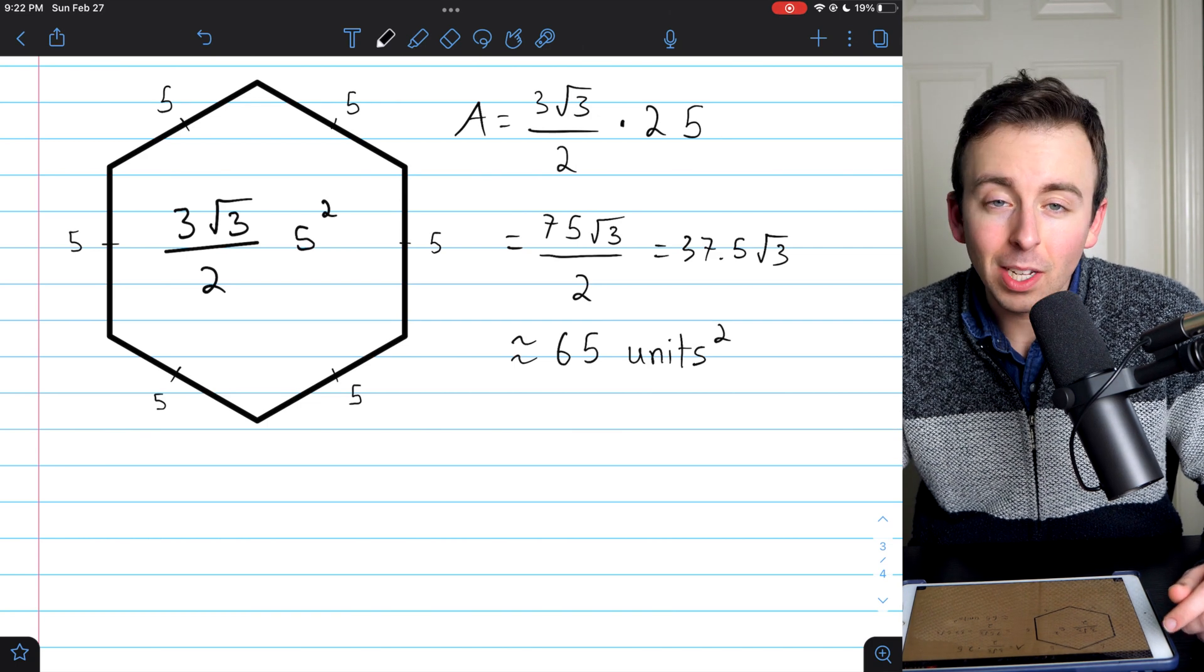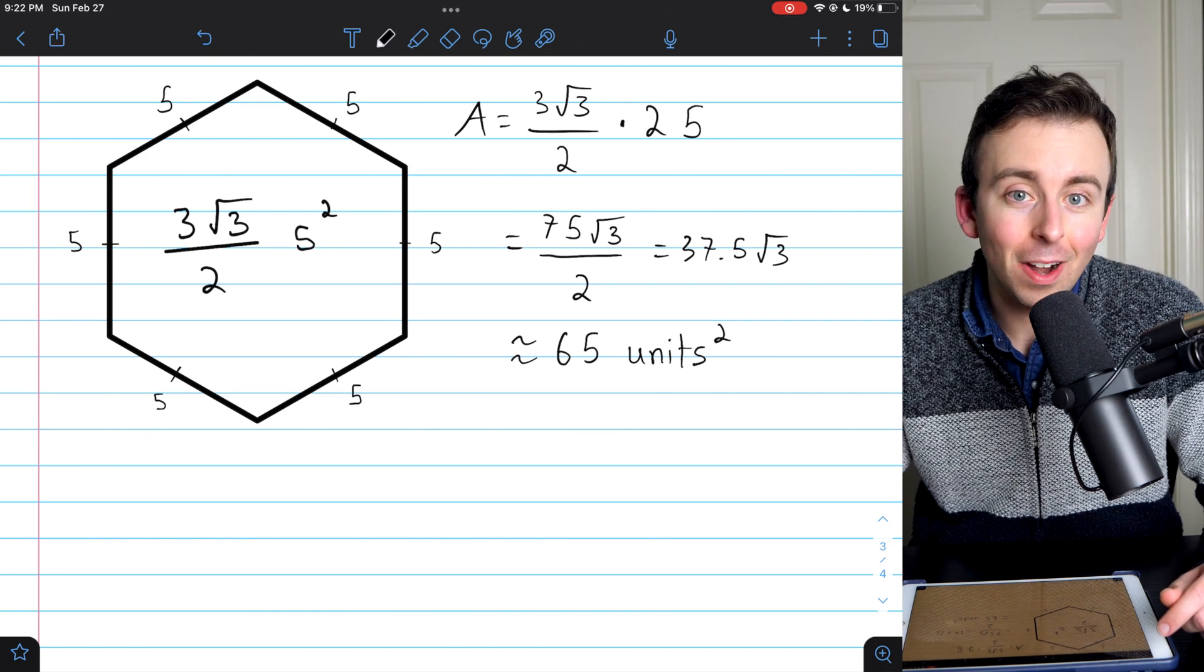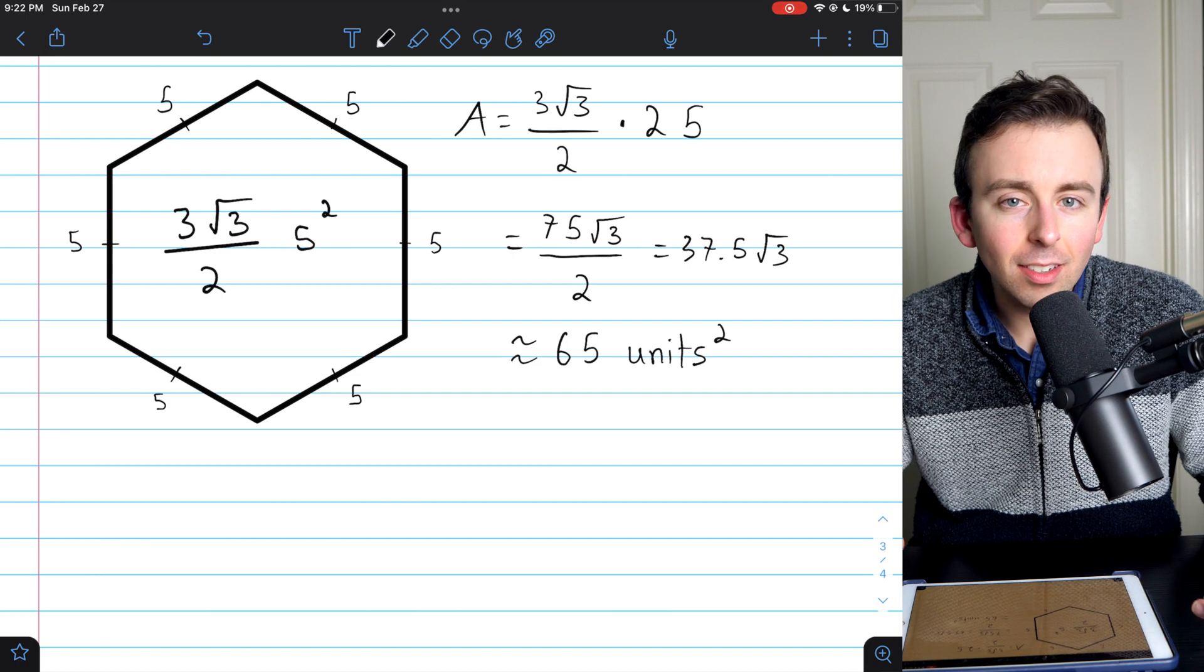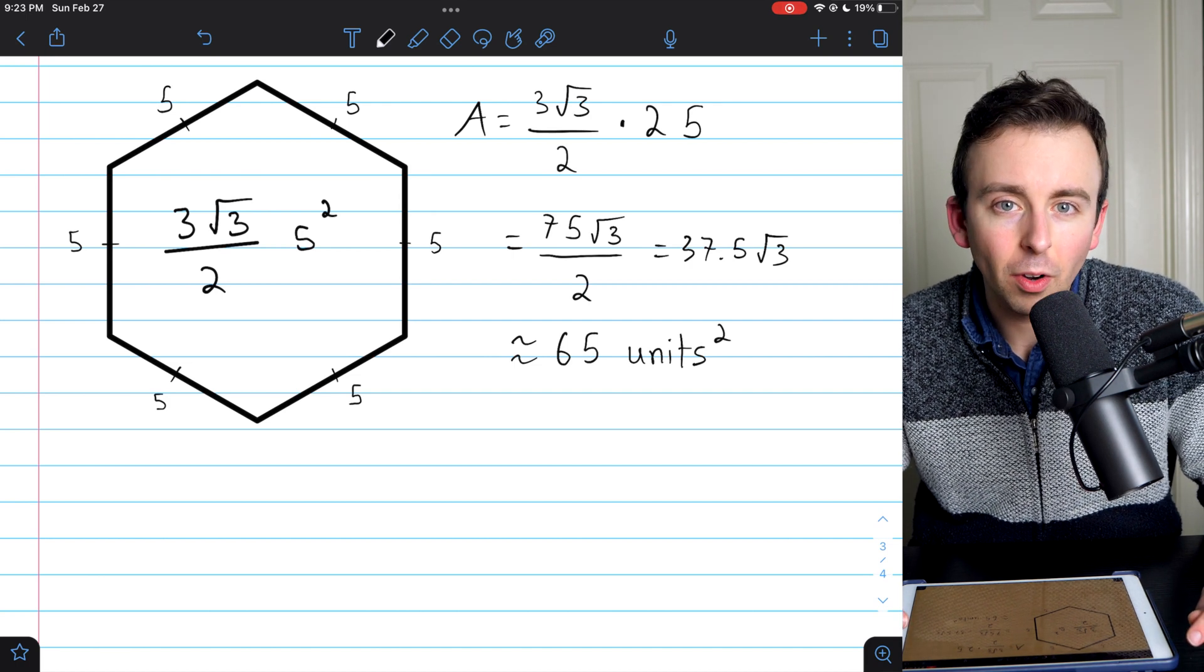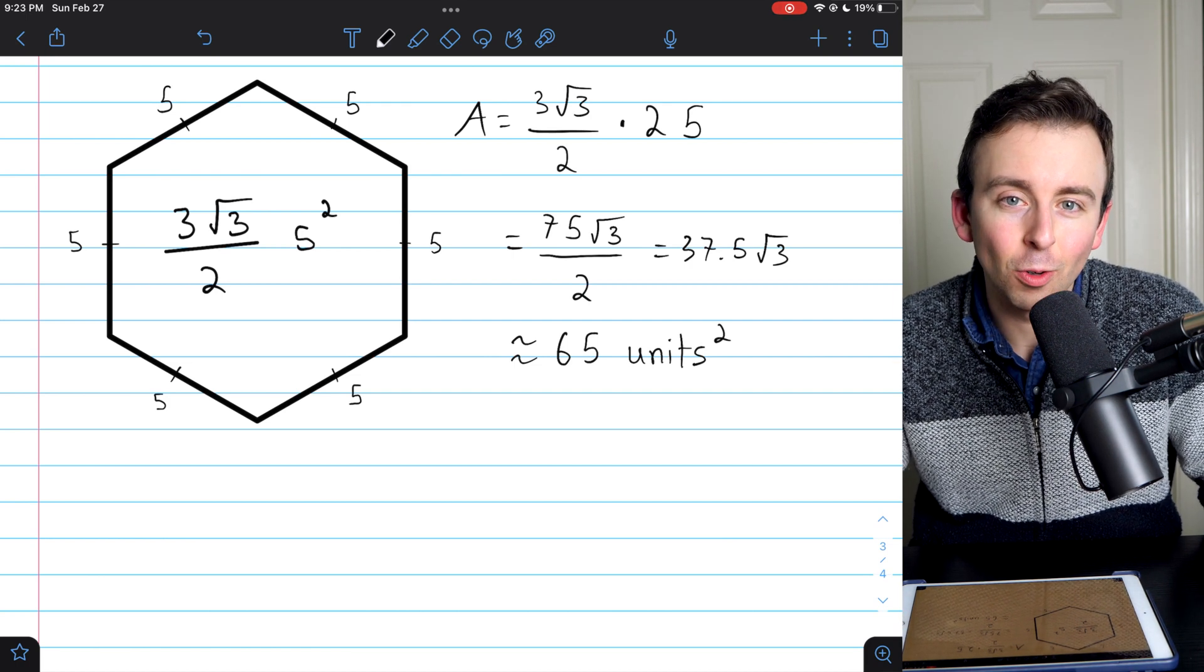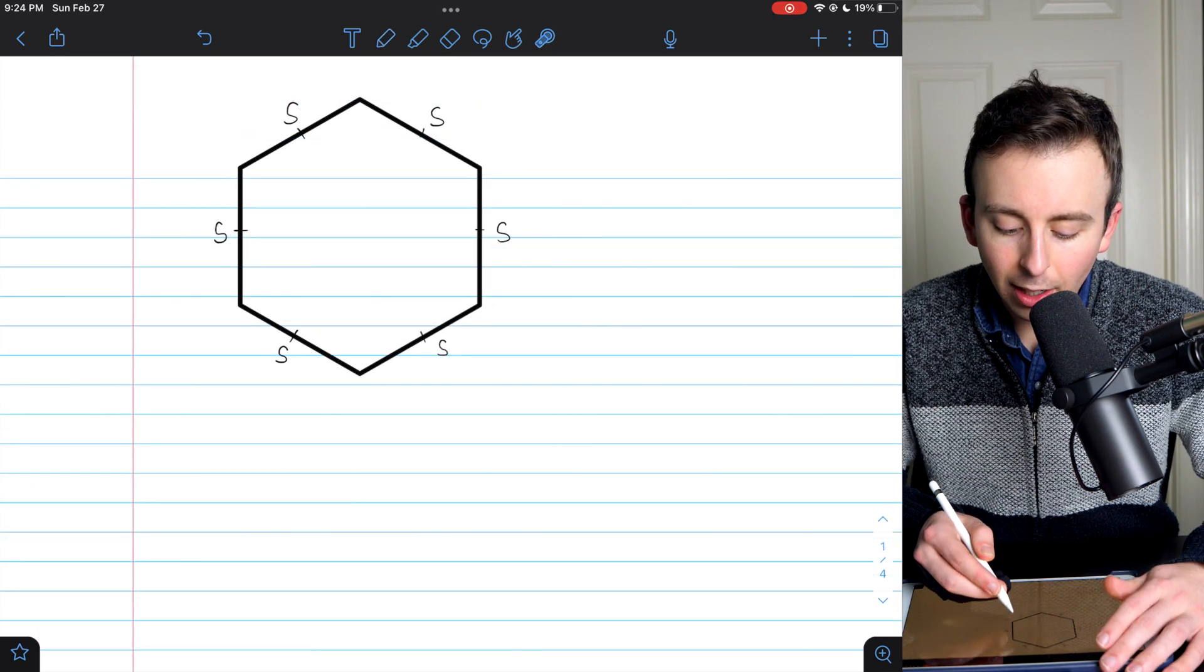That's all there is to it. That's how you find the area of a regular hexagon. Now let's take a minute to see where this formula comes from, which really is the more interesting part. Here is our regular hexagon.